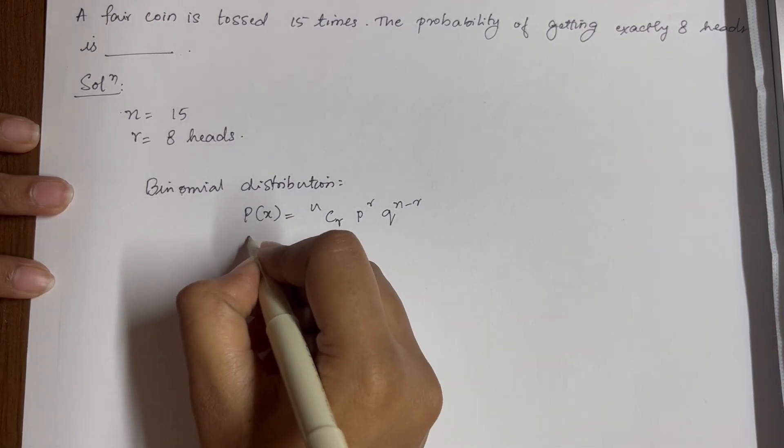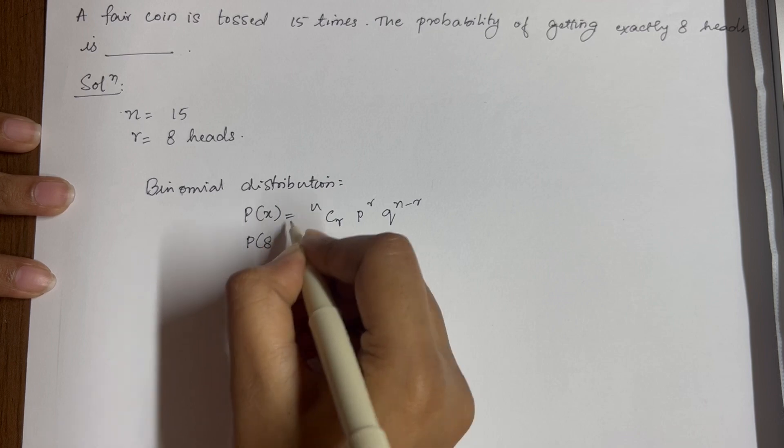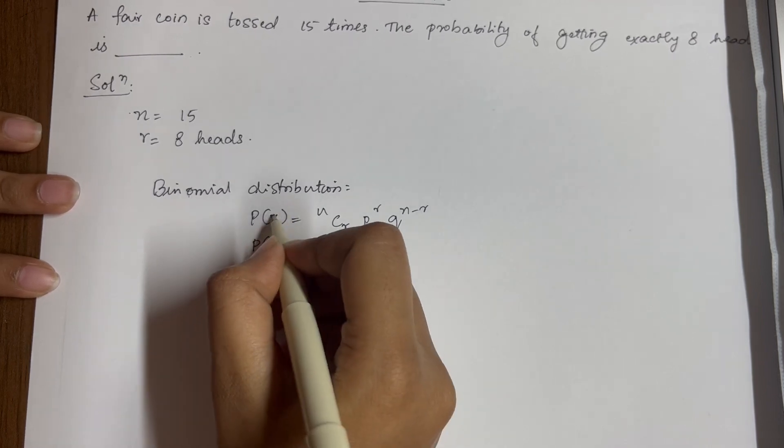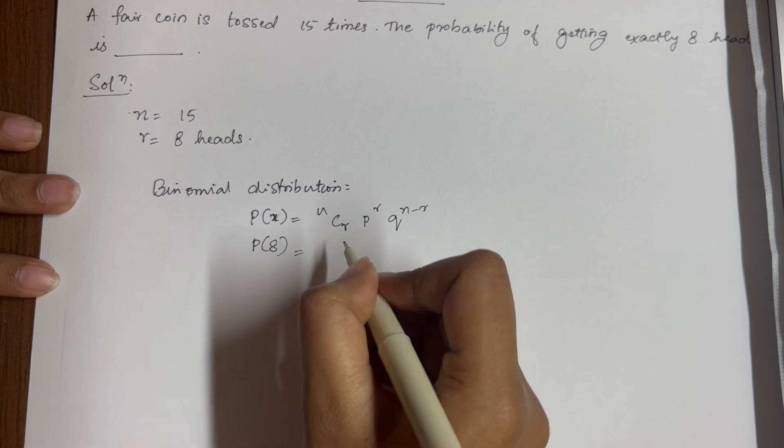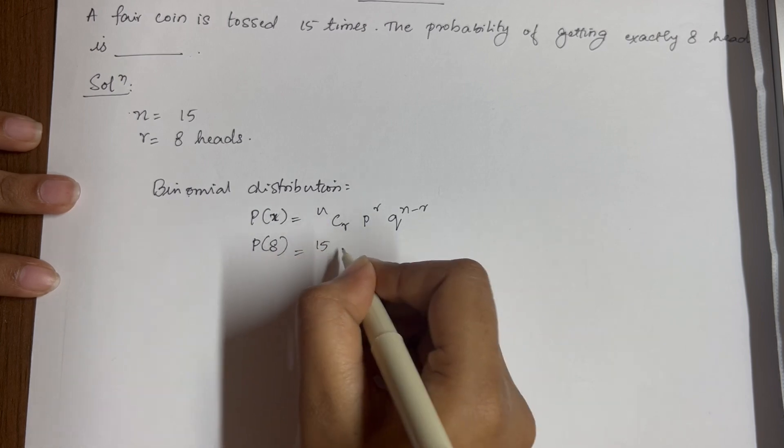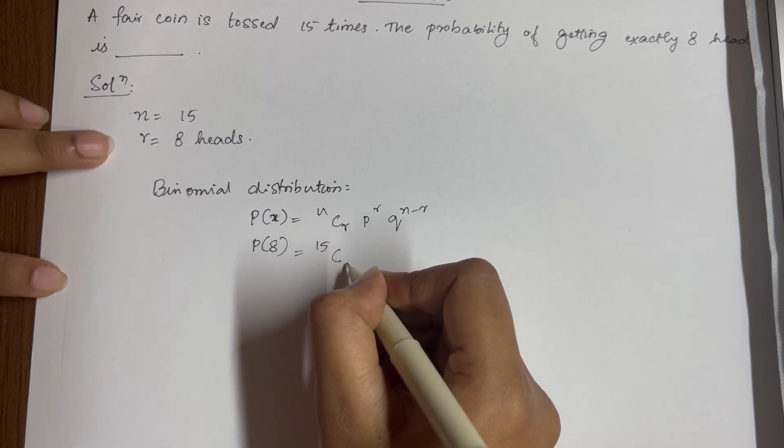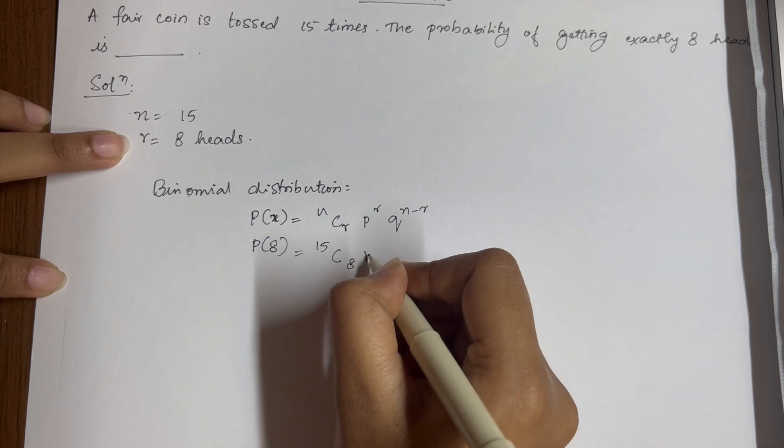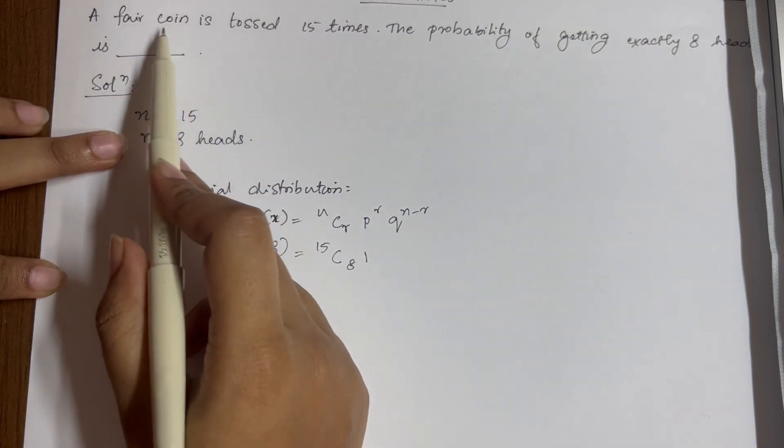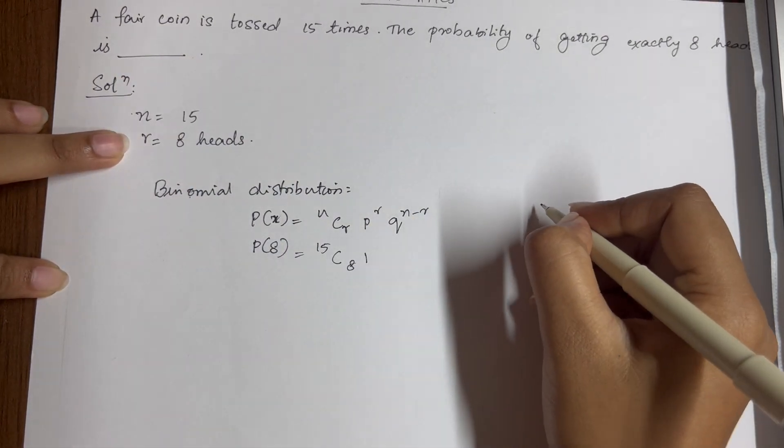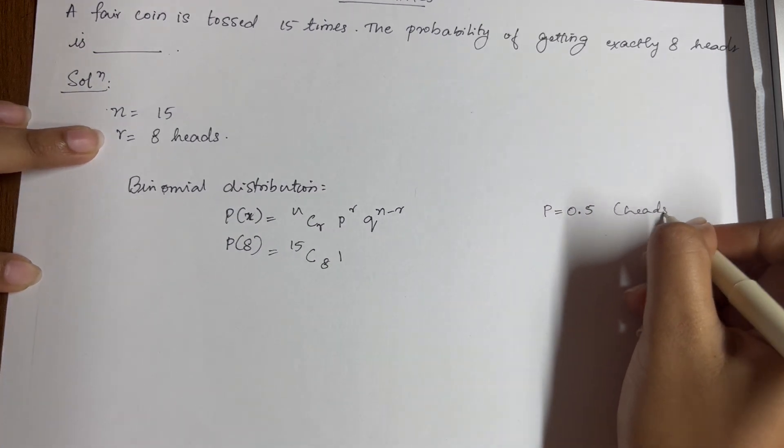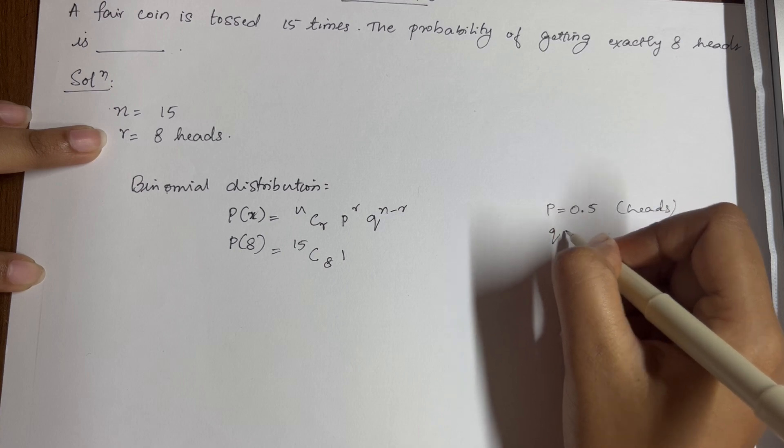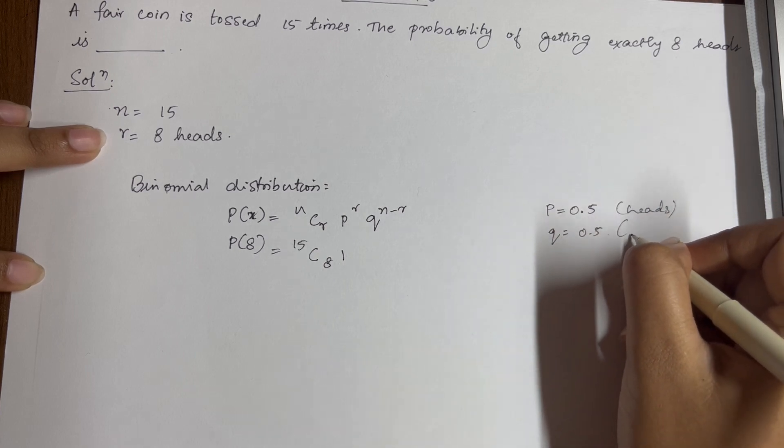We want P of 8. So probability of 8 heads is equal to n is 15, C, r is 8. P here is a fair coin is tossed, so p is 0.5 which is heads, and q is 0.5, which is probability of getting tails.